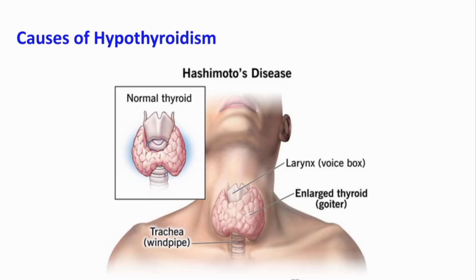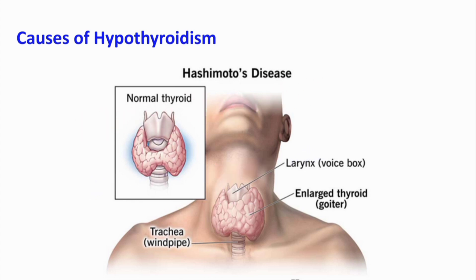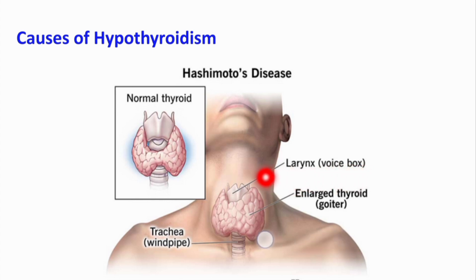The most common cause of hypothyroidism is Hashimoto's disease, which is an autoimmune disease in which autoantibodies are formed against the gland. They initially cause Hashimoto's thyroiditis, which means inflammation of the gland. Initially there is inflammation of the gland and it is later followed by fibrosis and destruction of the gland parenchyma, leading to decreased secretion of T3 and T4 hormones.